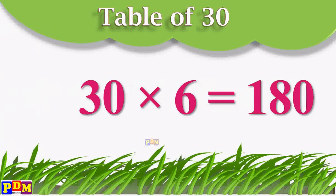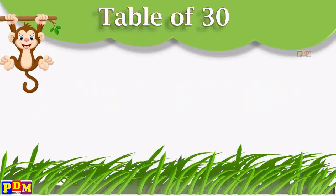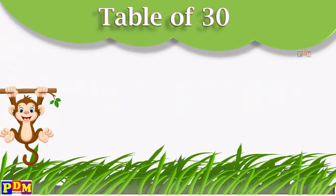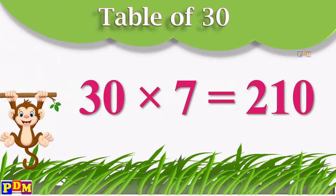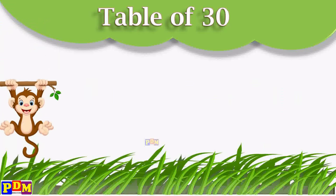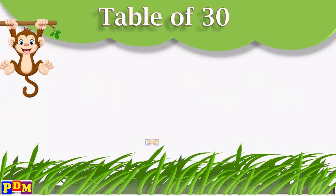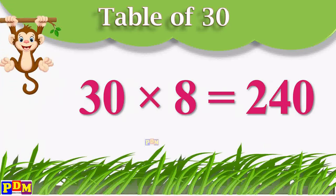3 6's are 180. 3 7's are 210. 3 8's are 240.